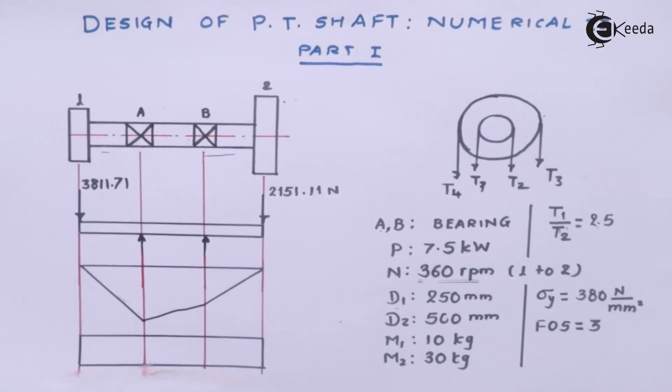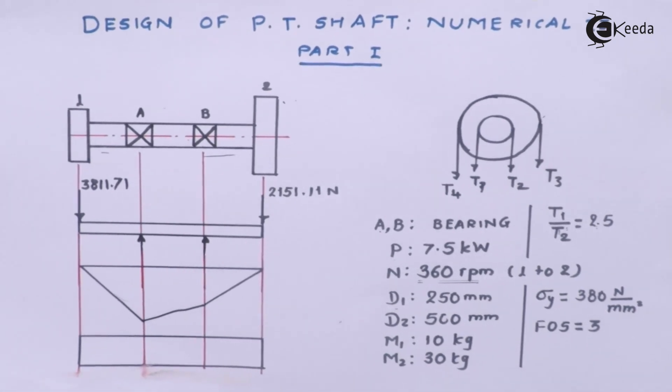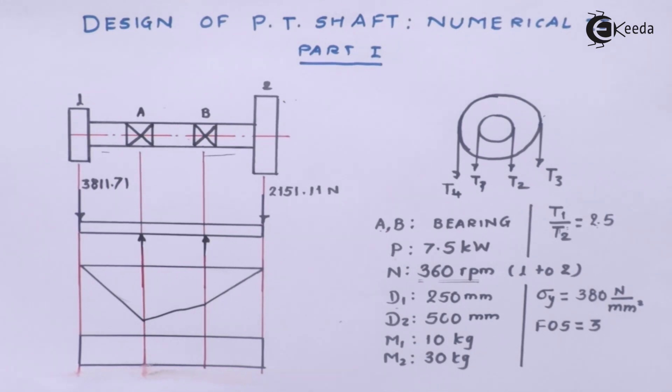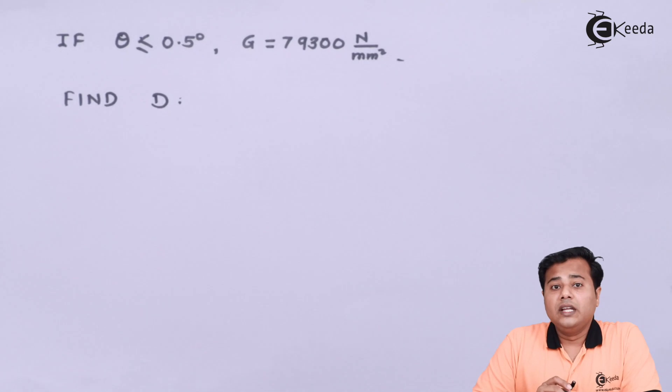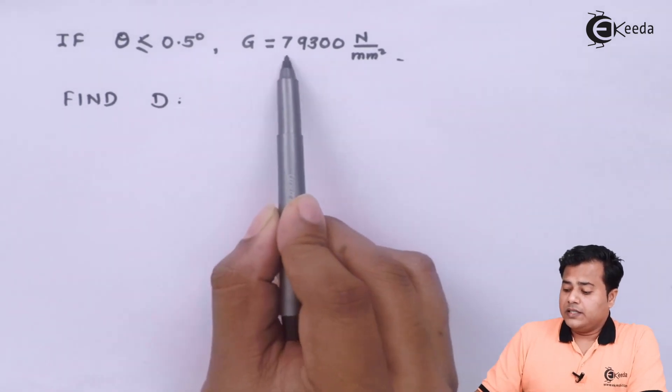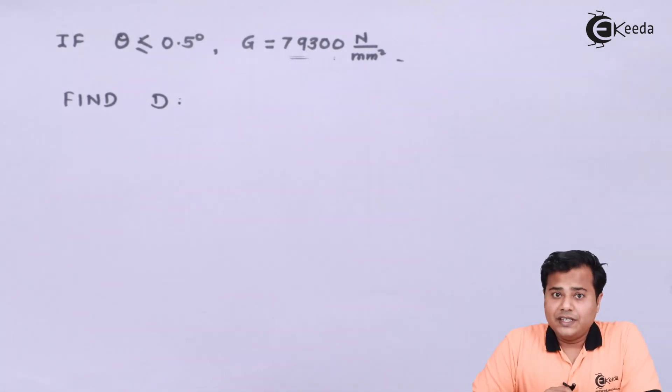Friends when we design the shaft it is important to design its diameter. And of course we need to consider the failure theories also. In addition they have given the rigidity constant also. This is the modulus of rigidity associated with the material of shaft. Ahead of which they say that the twisting should not be greater than 0.5 degree in the shaft.